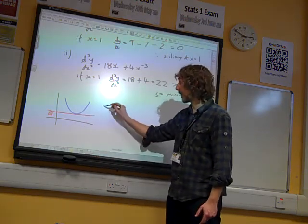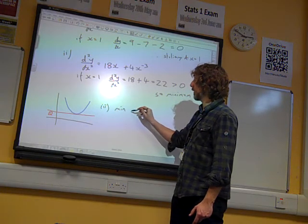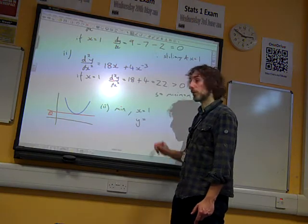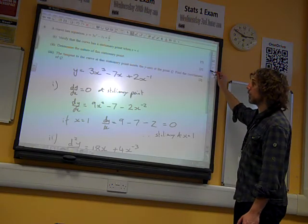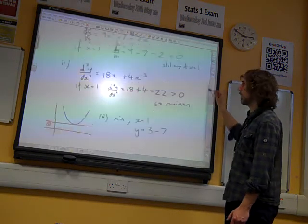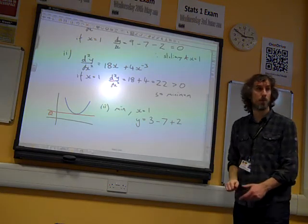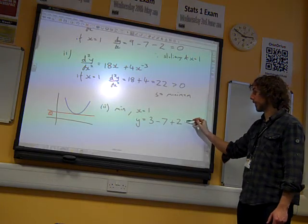So the minimum for part 3 is when x equals 1. And if x equals 1, y equals, what was the y-equation? 3x cubed minus 7x plus 2 over x. So 3 minus 7. Is that plus? Plus. 2 divided by 1. Which is minus 2.